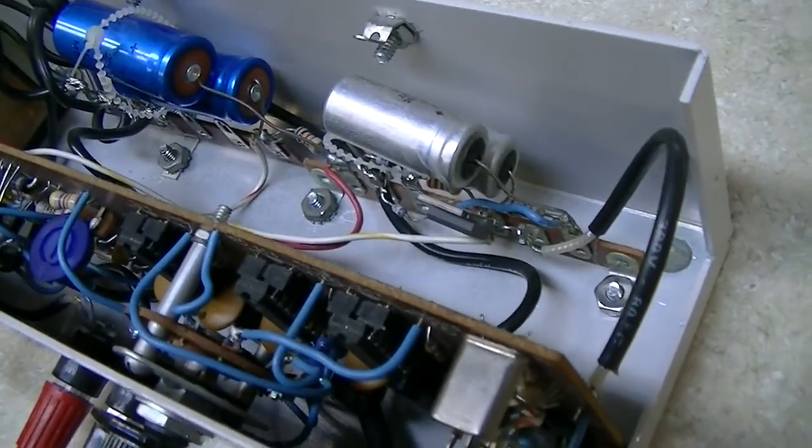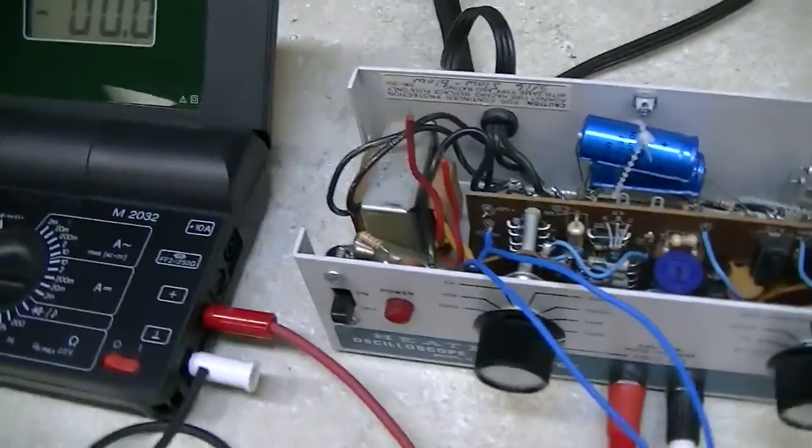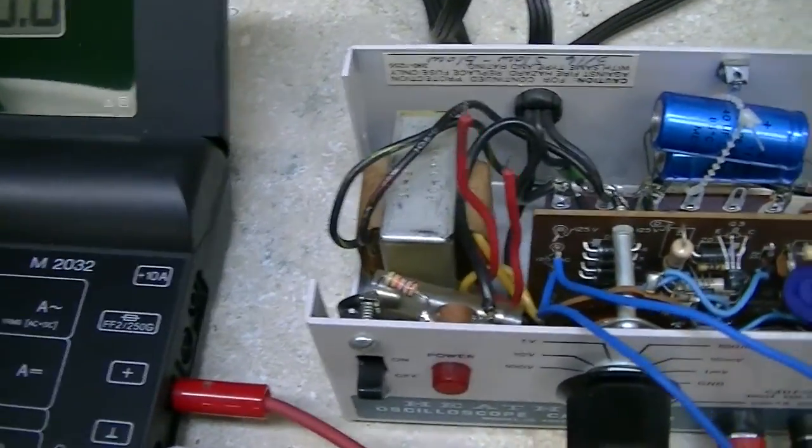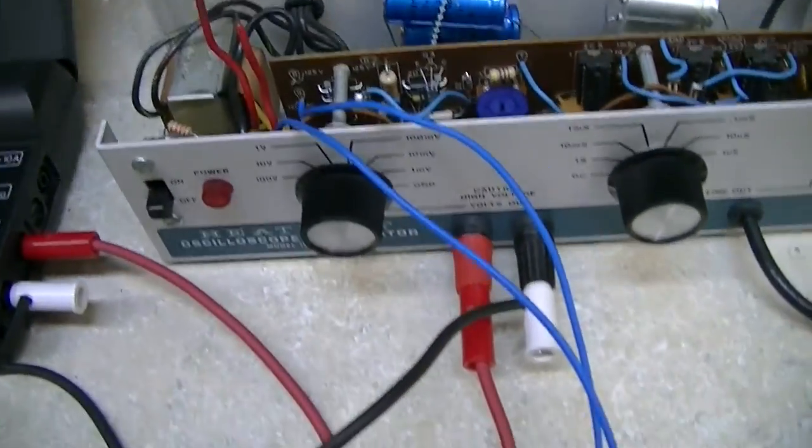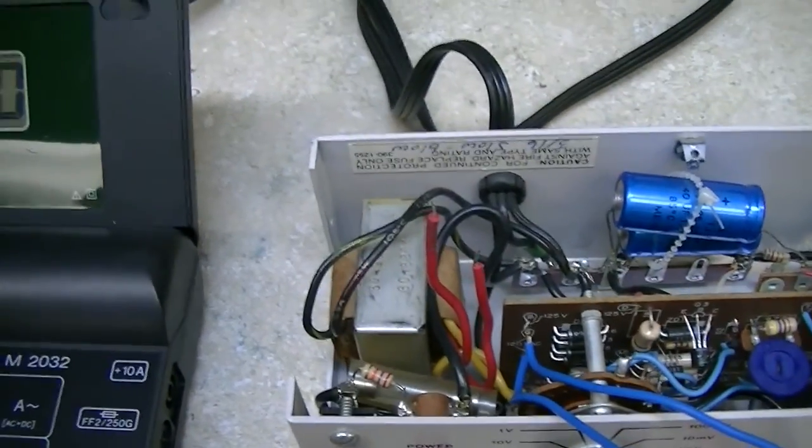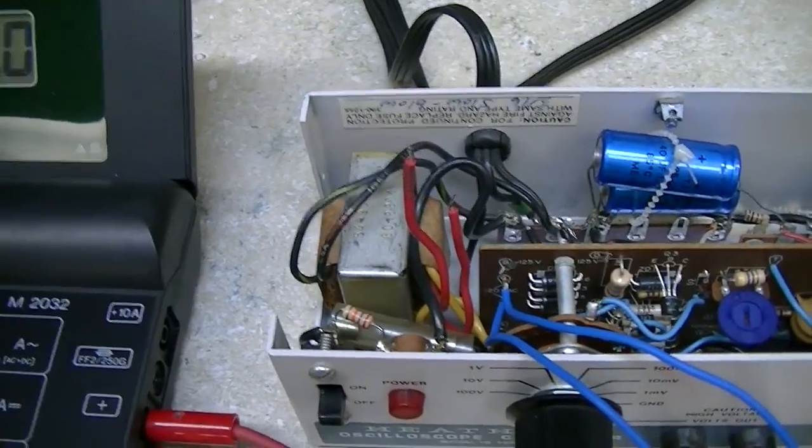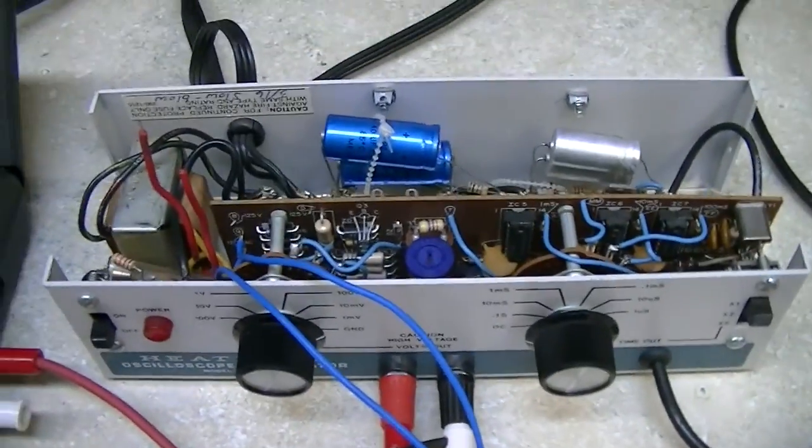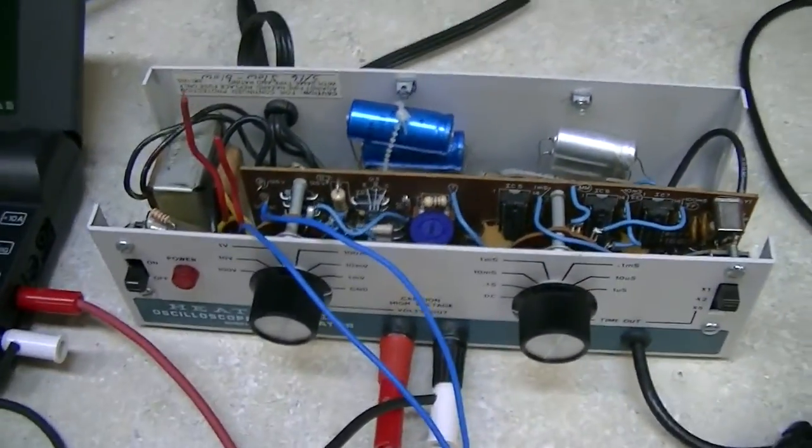And then I'm going to pull the transformer out of my good unit and put it in here now that I know that there isn't actually a problem here that fried that transformer, because everything is working normally. I should have myself a Heathkit oscilloscope calibrator that basically looks like brand new.